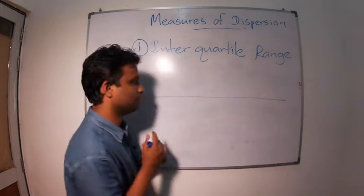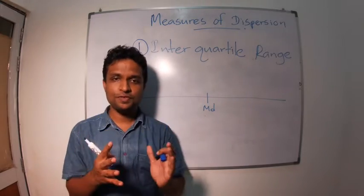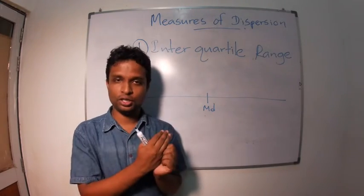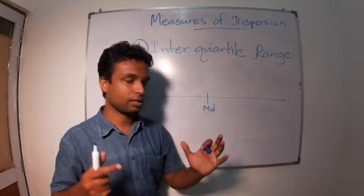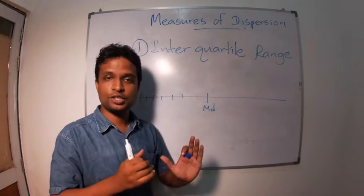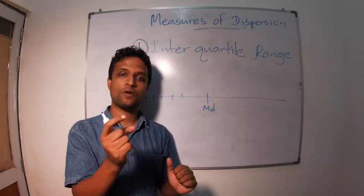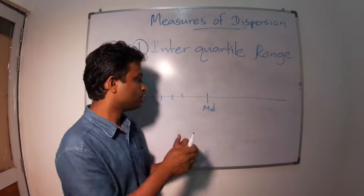You know that what is the middle value? Middle value is median. We divide the total distribution into 100 parts. Like that we divide the distribution into 100 parts and one part is known as centile.